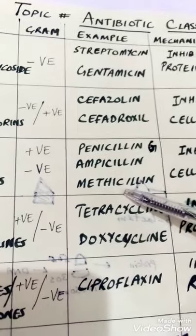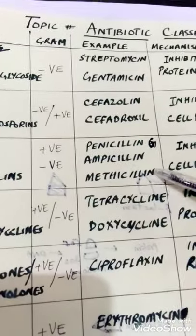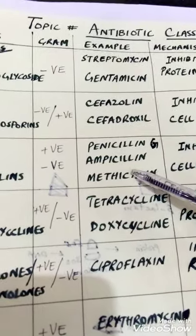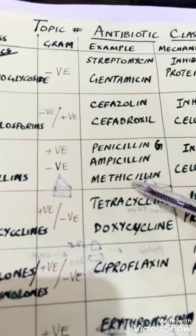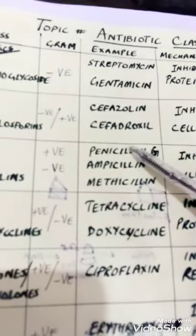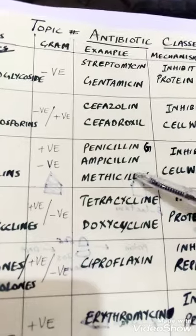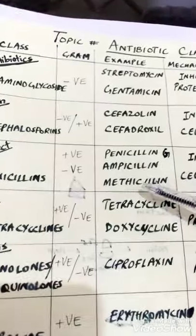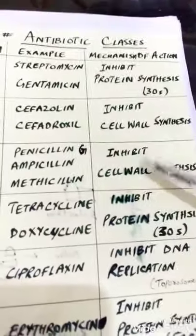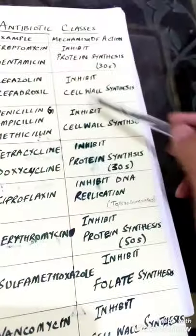The third type of penicillin is methicillin, which is a very broad-spectrum antibiotic that can kill both gram-positive and gram-negative bacteria. Methicillin is used last — if there is resistance against penicillin G and ampicillin, methicillin will destroy the bacterial cell. It also works by inhibiting cell wall synthesis, the same mechanism as cephalosporins.